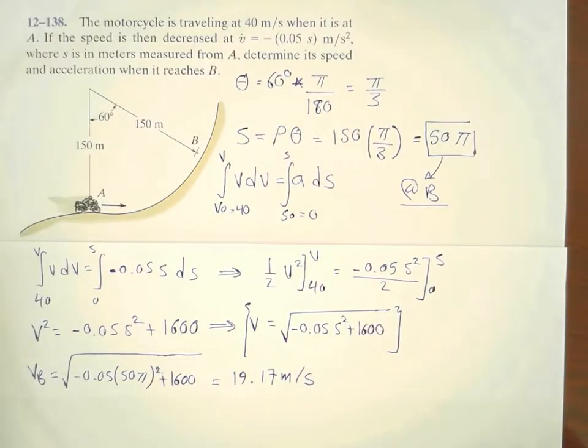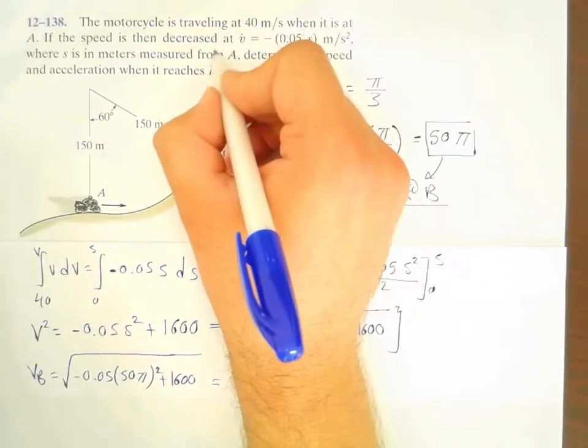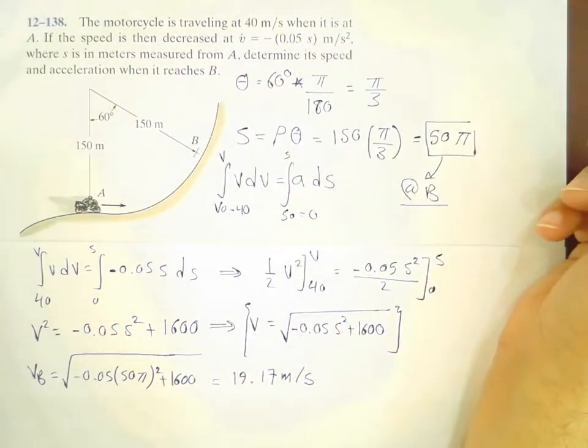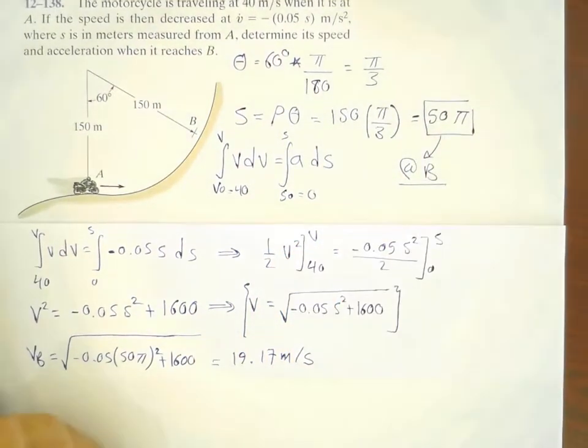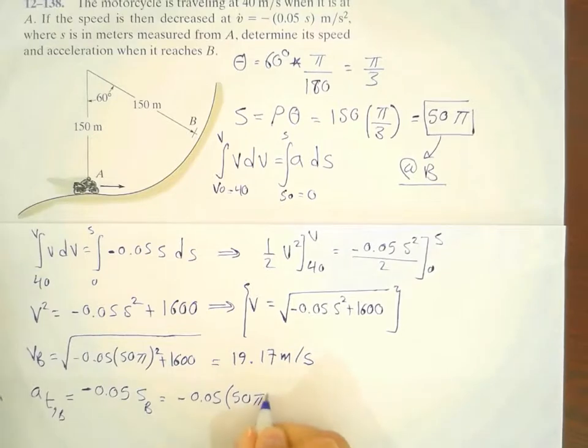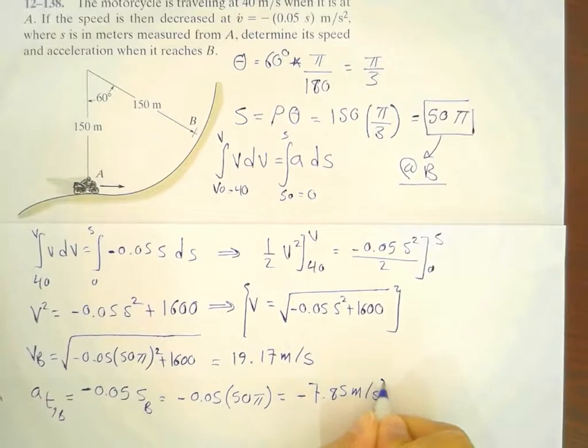Now, for the acceleration, we just simply take this relationship to describe the tangential component of the acceleration. We say A_tangential here is equal to minus 0.05 S. At point B, we just simply substitute and say minus 0.05 times 50π would give us minus 7.85 meters per second squared.